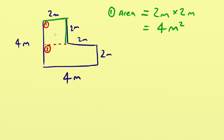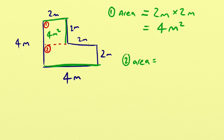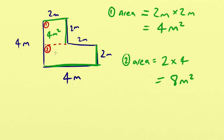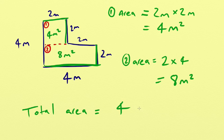So that's the area of shape 1 — we can write 4 metres squared in there. Now let's focus on shape 2. The area of shape 2 is the length of one full side by the length of the other full side, enclosing that section. So it's 2 times 4, which gives us 8 metres squared. The area of shape 1 is 4 metres squared and the area of shape 2 is 8 metres squared, so the total area is 4 plus 8, which gives us 12 metres squared.